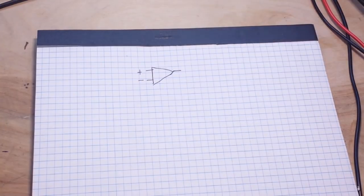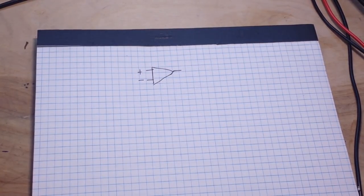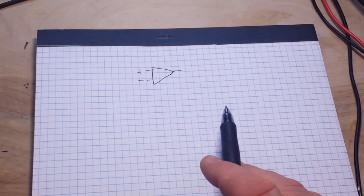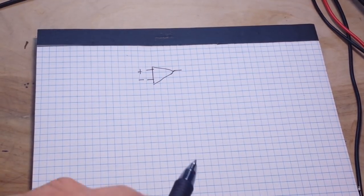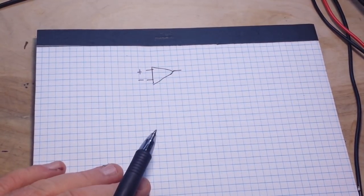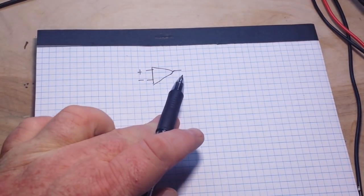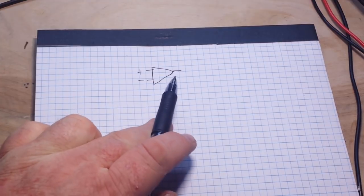And then we also have the output. This is the third terminal in the device. One thing to keep in mind with the output is that it can either source or sink current.